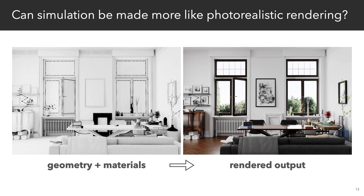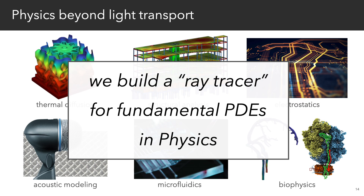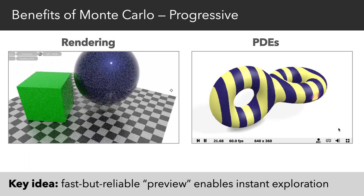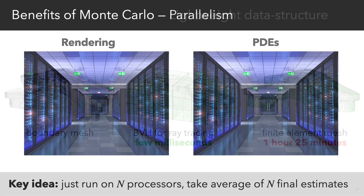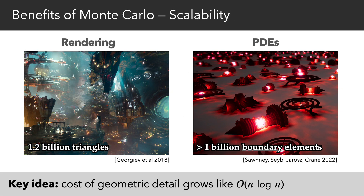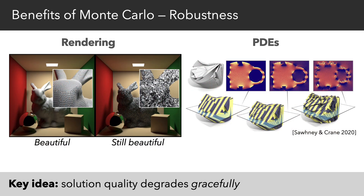But imagine if, like Monte Carlo rendering, we could just load up a complex model and hit go without worrying about meshing. In this work, we take a major step towards this vision by showing how Monte Carlo methods for partial differential equations can provide many of the same benefits we see with rendering today, such as progressive and view-dependent evaluation, perfect parallel scaling, hardware-accelerated data structures such as bounding volume hierarchies, the ability to scale to billions of instance elements, and to easily handle geometry with defects and low-quality triangles.